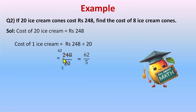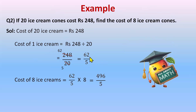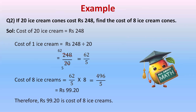Now we have the cost of one ice cream cone. To find the cost of many, we multiply. So the cost of 8 ice cream cones will be 62/5 multiplied by 8, giving 496/5 rupees. Dividing, the answer in decimal is 99.20 rupees. So 99.20 rupees is the cost of 8 ice cream cones. The simple concept: first find the cost of one item by dividing, then find the cost of many items by multiplying.